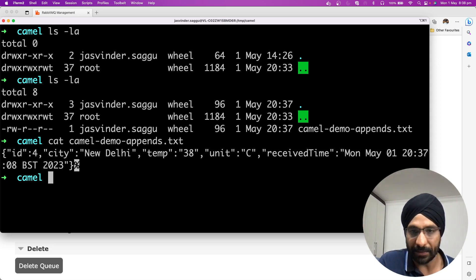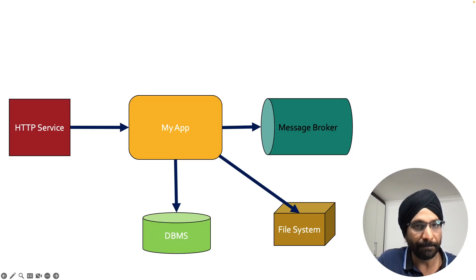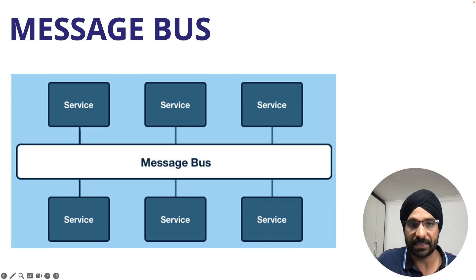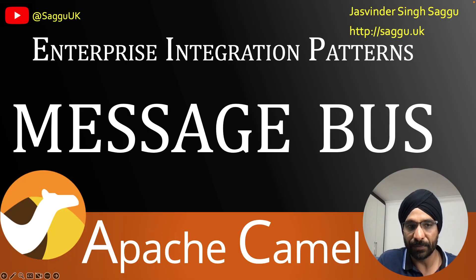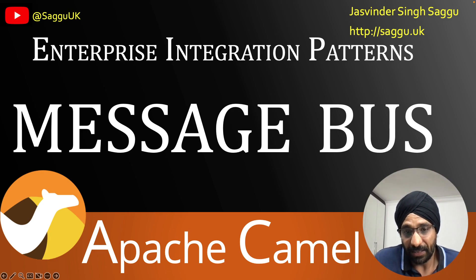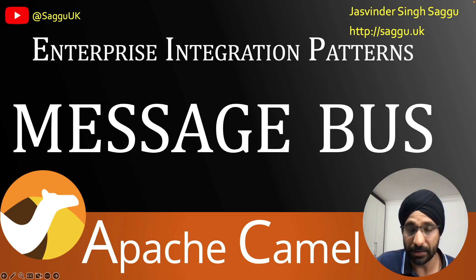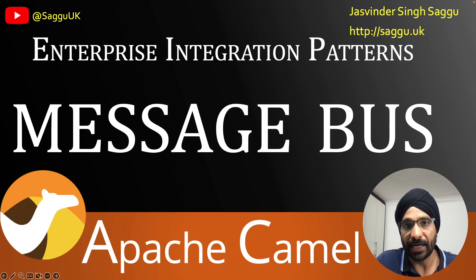Also, if I do 'ls -l' in the terminal, you can see the 'camel-demo-appends.txt' has been created just now. We have the message here. We don't have Glasgow because at that point we had not integrated with the file system, but now we managed to connect our message bus to another destination. That's what I wanted to show today — how easy it is to implement a message bus design pattern using Apache Camel. I hope you enjoyed this video. Please subscribe if you can, leave me a comment, tell me what sort of videos you'd like to see going forward, and thank you for your support. I'll see you in the next video. Bye for now.